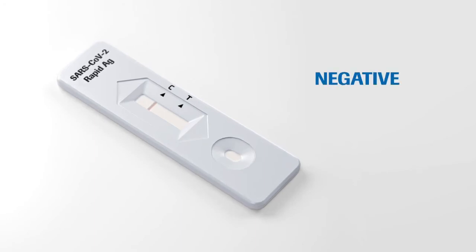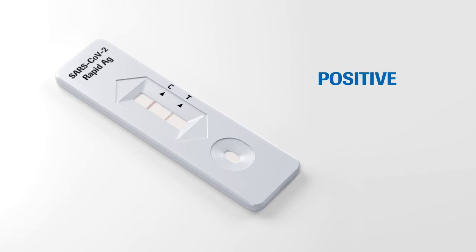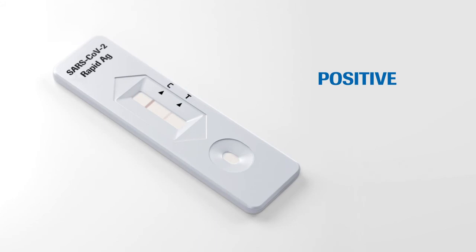In the case of a negative result, only this line appears. In case of a positive result, a colored line appears in the lower section of the result window. This is the test line T. Even if the test line is very faint or not uniform, the test result should be interpreted as a positive result.